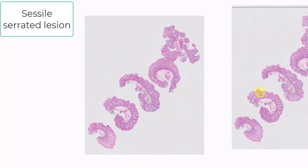Hi there. I'm going to talk about sessile serrated lesions. We used to call them sessile serrated lesions slash polyp. The word is lesion, although I'd much prefer the word adenoma. This is for your first-year trainee. When you look at sessile serrated lesions under very low power, they look essentially like hyperplastic polyp — none of that blueness that you typically see with an adenoma.